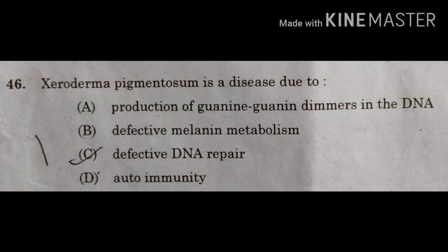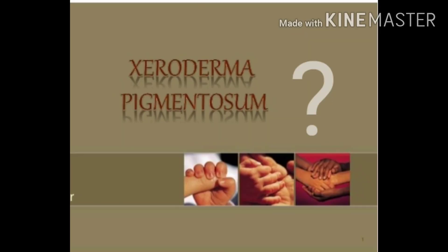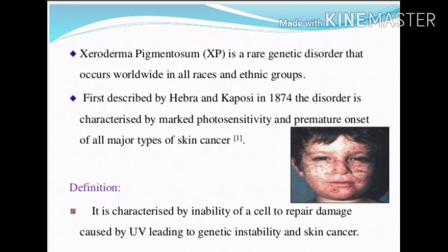Let us start the discussion. The question is: Xeroderma Pigmentosum is a disease due to — option A: production of pyrimidine dimers in DNA; option B: defective melanin metabolism; option C: defective DNA repair; and option D: auto-immunity.